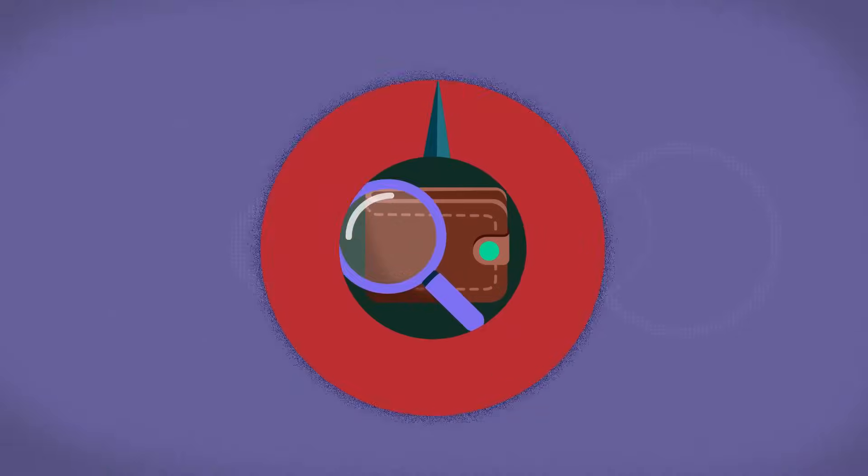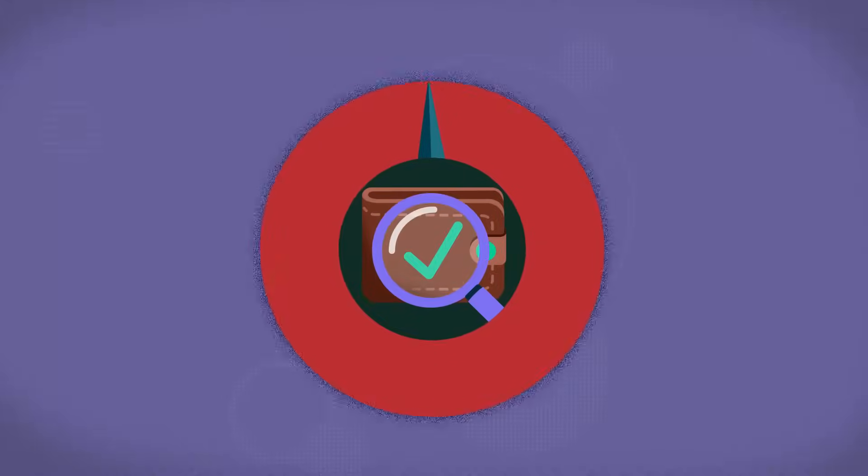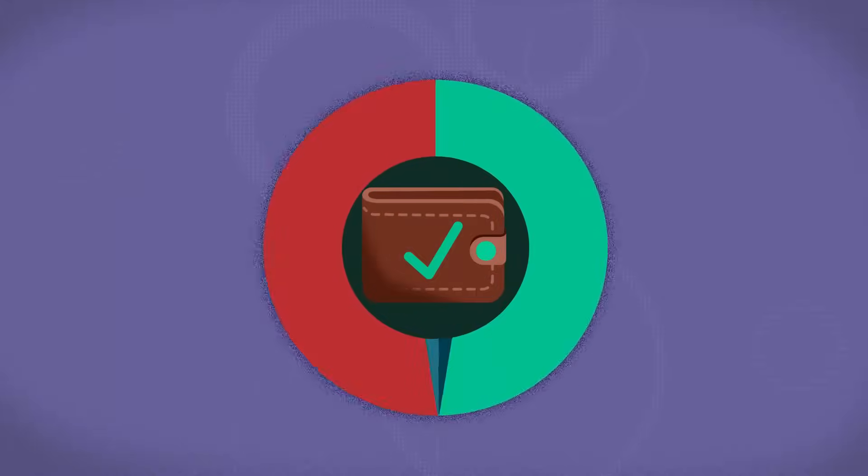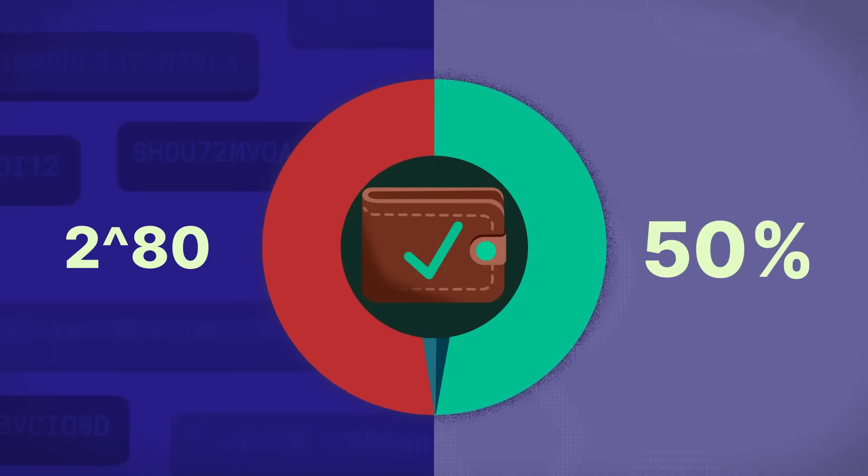But practically speaking, one won't need to go through all the possible addresses to find the right one. Just checking half of all the possible addresses, or 2 to the power of 80 addresses, would yield a 50% probability of running into your address.